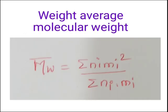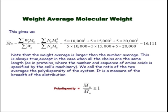Now we calculate the weight average molecular weight: Mw = (ΣNi·Mi²) / (ΣNi·Mi). Putting in all values: Mw = (5×10,000² + 5×15,000² + 5×20,000²) / (5×10,000 + 5×15,000 + 5×20,000). The answer is 16,000. Note that the weight average molecular weight is always larger than the number average molecular weight — except when all chains are the same length.